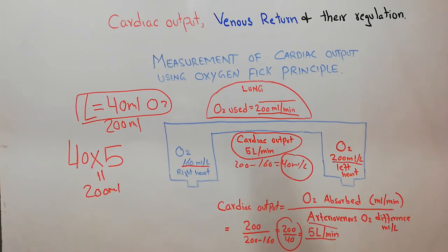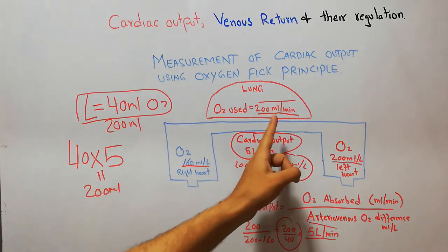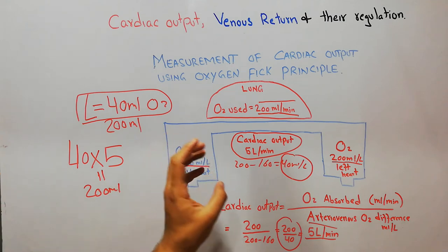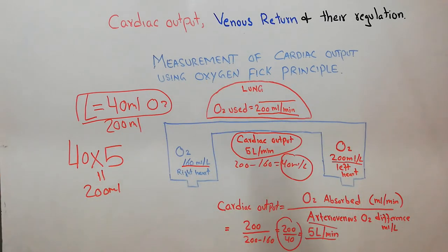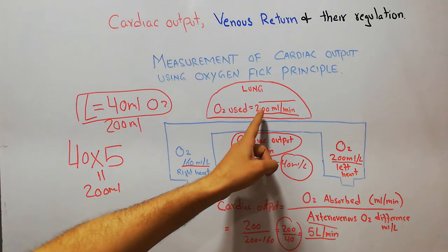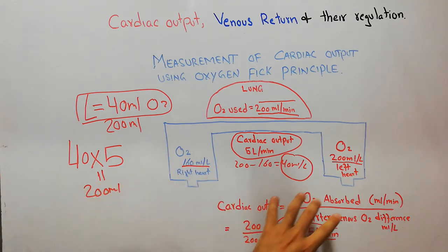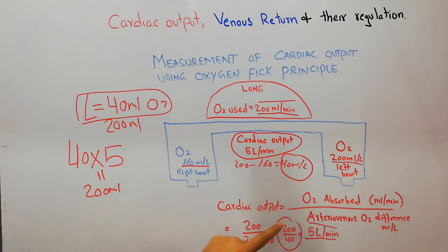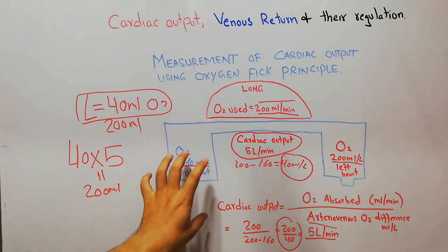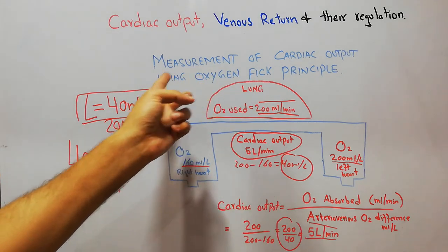This is a very simple and easy method known as the oxygen Fick principle. It states that we know from the oxygen meter that 200 ml of oxygen is used by the lung every minute, and one liter of blood consumes only 40 ml of oxygen. So to consume 200 ml, the blood must move around five times per minute, meaning the heart is pumping five liters of blood per minute. This can also be calculated using the equation: cardiac output equals oxygen absorbed divided by the arteriovenous oxygen difference.